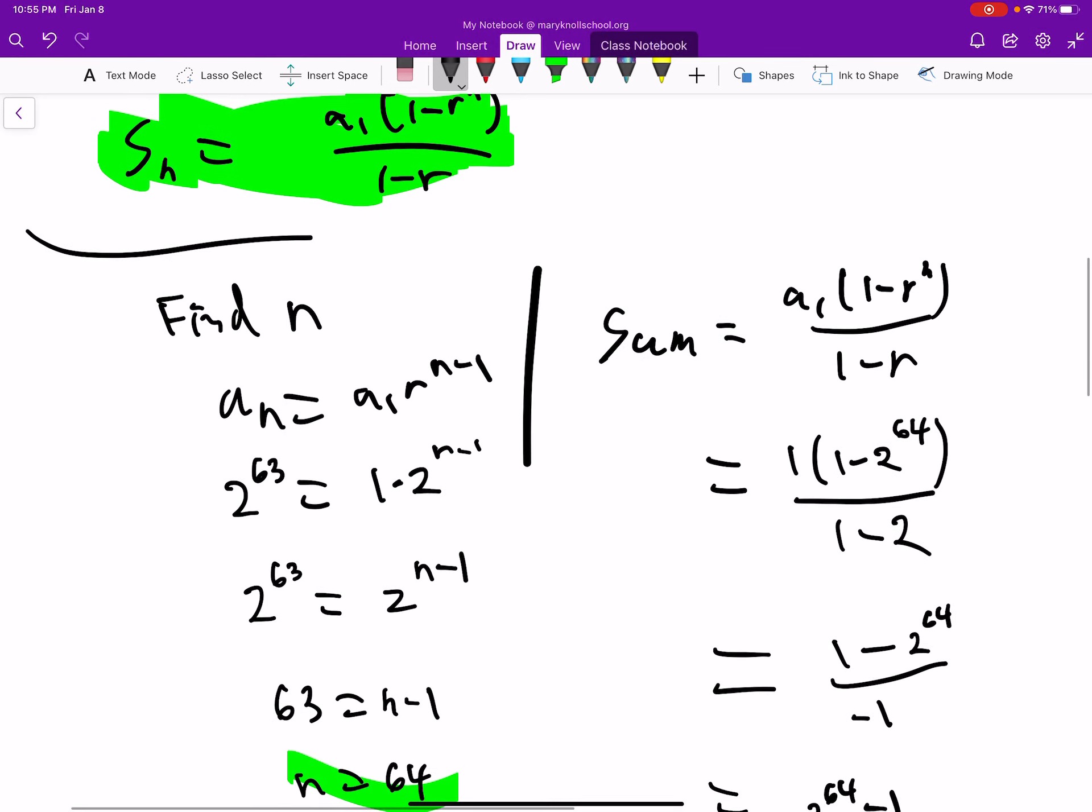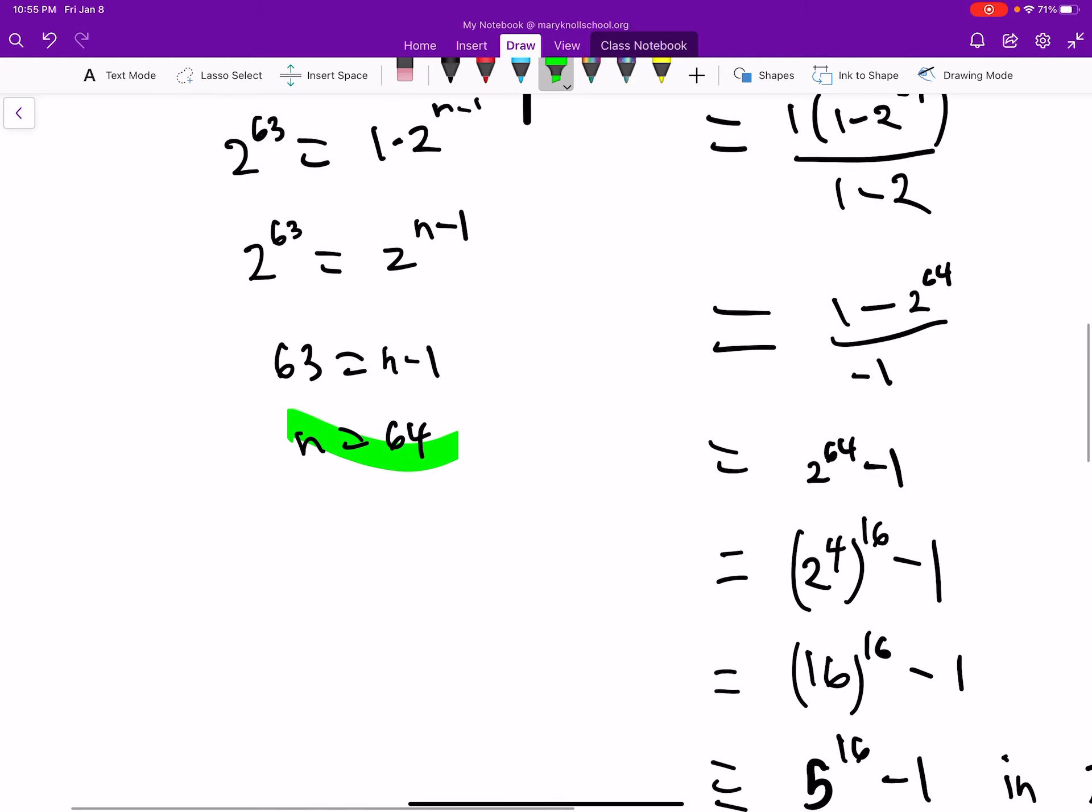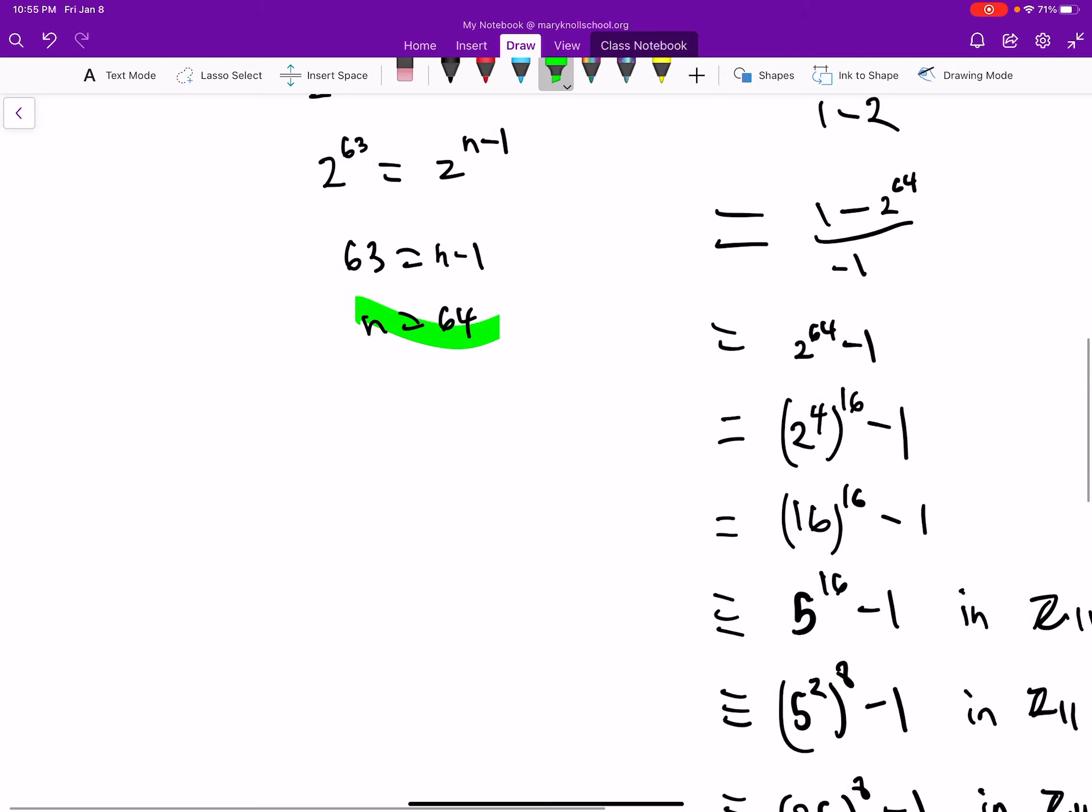So then let's go over here. We've got r, we've got n is 64, we've got a1 is 1. So fill that out, and we find out that we get this number here.